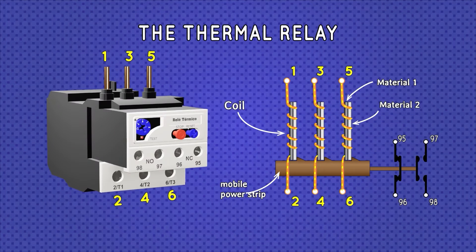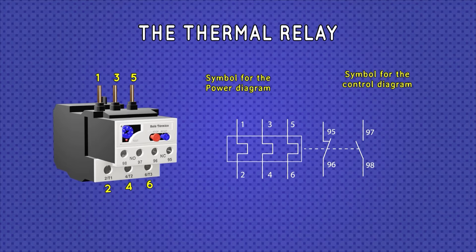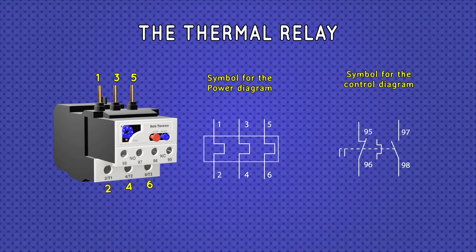As already said, a thermal relay has no braking power, that is, its main power contacts do not open. Those that change state are only their auxiliary contacts, which are used in the command and control circuit. The symbol that represents this element is the one shown on the screen, which has two parts, one for the power scheme or circuit and another for the command or control scheme. It is also possible to find it separately.